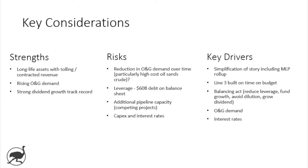Here are some key considerations. When you think about strengths, Enbridge has a business model with contracted revenue — so not the same degree of cyclicality that an oil and gas producer or energy services firm would have. It's got long-life assets with tolling-type revenue and contracted revenue. Where Enbridge could potentially get into trouble is counterparty risk: if the oil and gas producers on the other side of these contracts go under, these take-or-pay contracts wouldn't be fulfilled. But for the most part, they've got a really strong, stable business model.